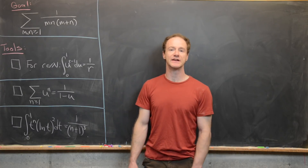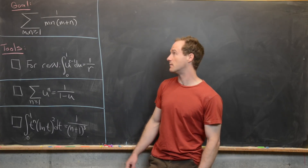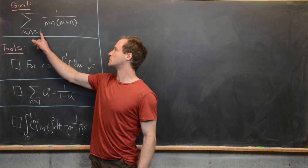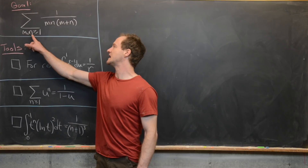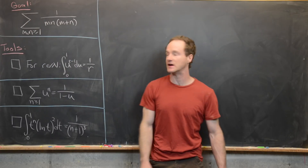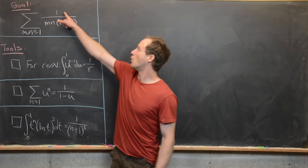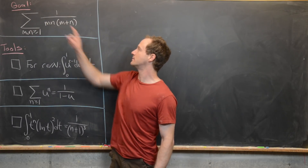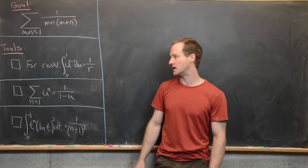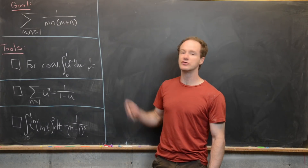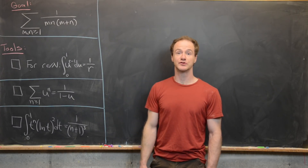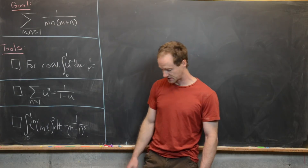Here we're going to calculate a pretty interesting double sum: the sum from m equals 1 to infinity and n equals 1 to infinity of 1 over m times n times m plus n. We're going to use three tools in order to evaluate this sum.